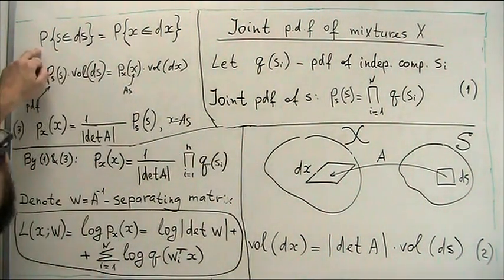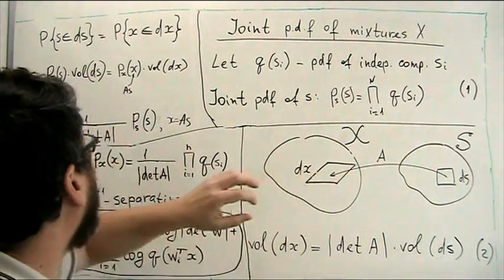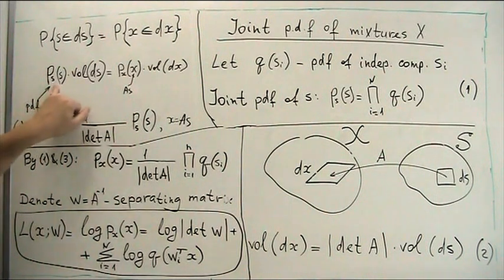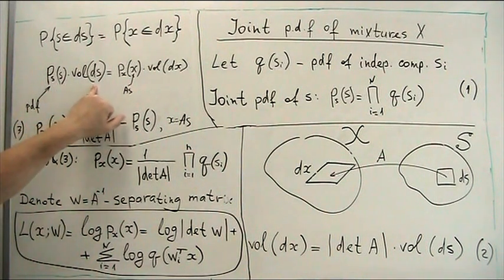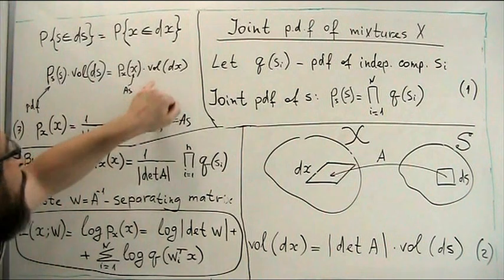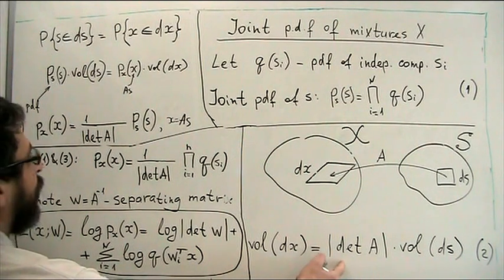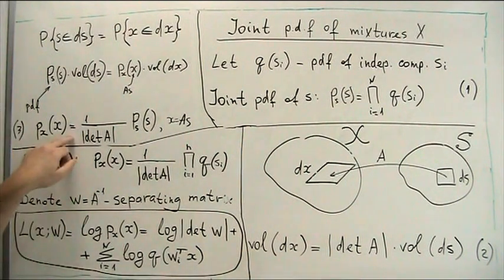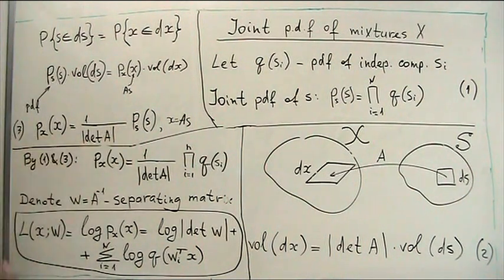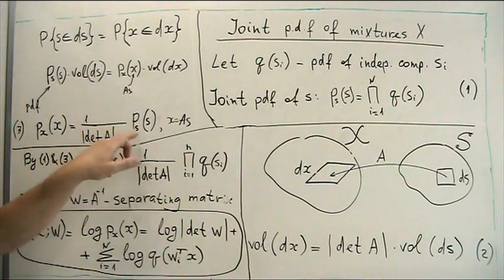So, what we get finally, when those areas are small, then probability is approximately as probability density function of S multiplied by volume of dS is as probability density function in x, where x is as, multiplied by volume of dx. And the relation between volumes we have. So, finally, this is a simple and known formula of how probability density function changes when we apply linear transformation to our vectors S.